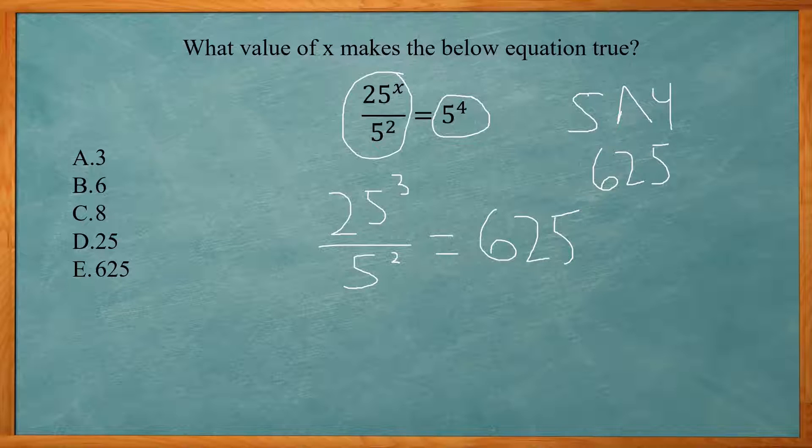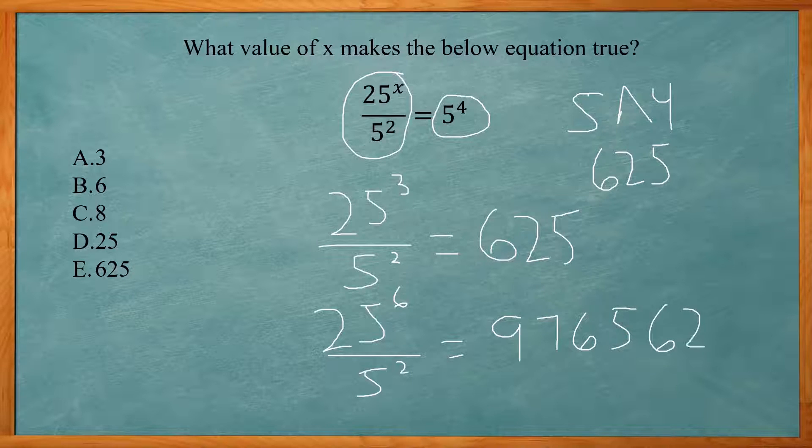So we were able to get the right answer on the first try. You know, if you were to do the next one, that would be 25 to the sixth power divided by 5 to the second. That gives us 9,765,625. Nearly 9 million. So we were able to get this on the first try with answer choice A.